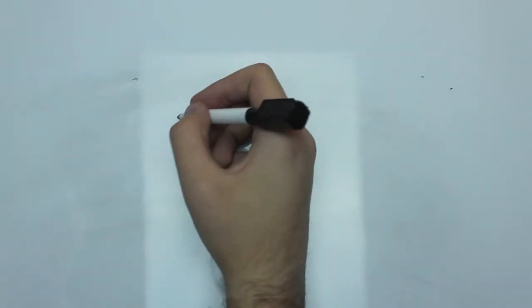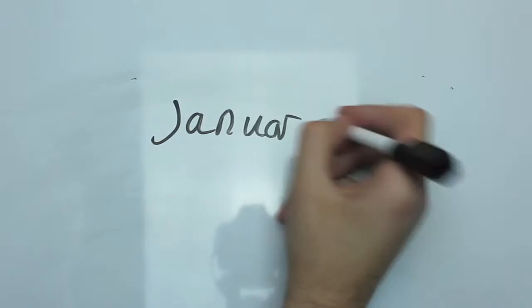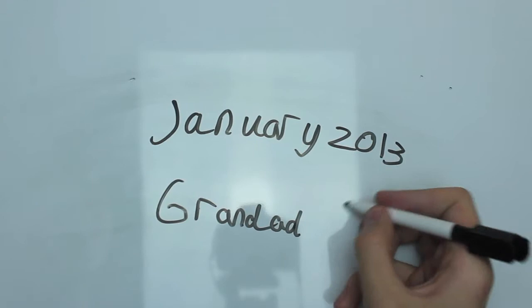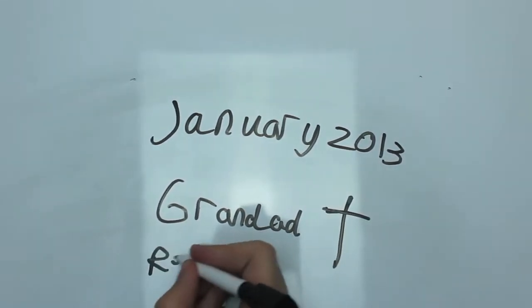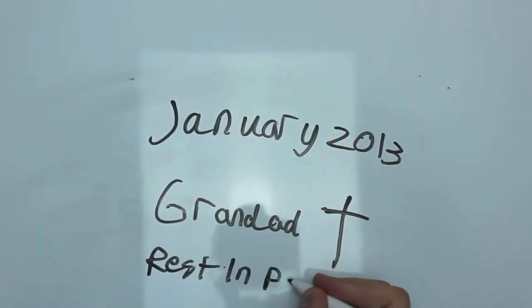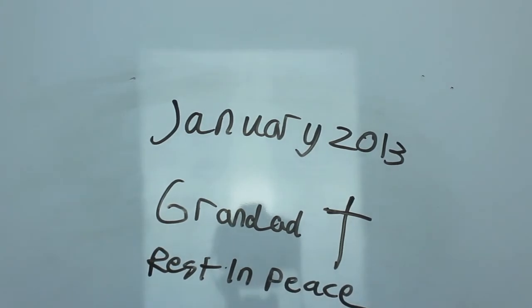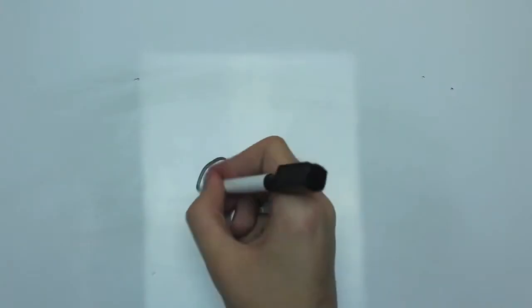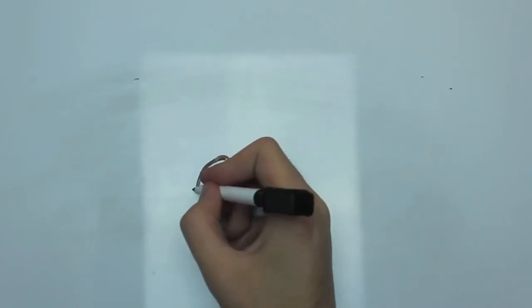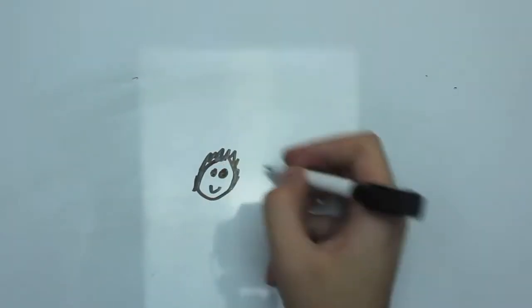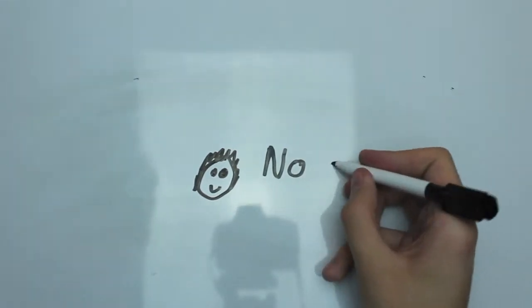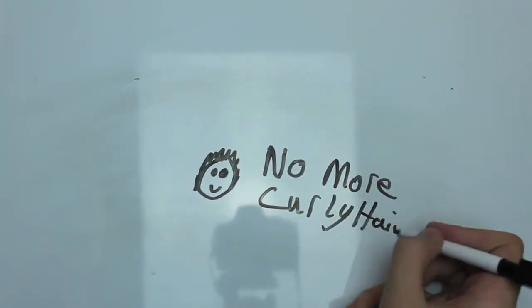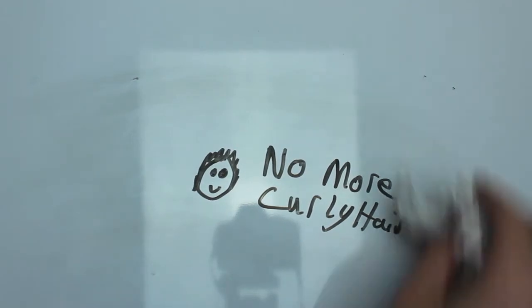Unfortunately in January of 2013 my grandad passed away. I consider my grandad as an influence for me starting YouTube because he used to do a lot of video recording and it's what influenced me to pick up a camera. I decided to have a change of character and went short hair wise, because I had curly hair for so many years. No more curly hair.